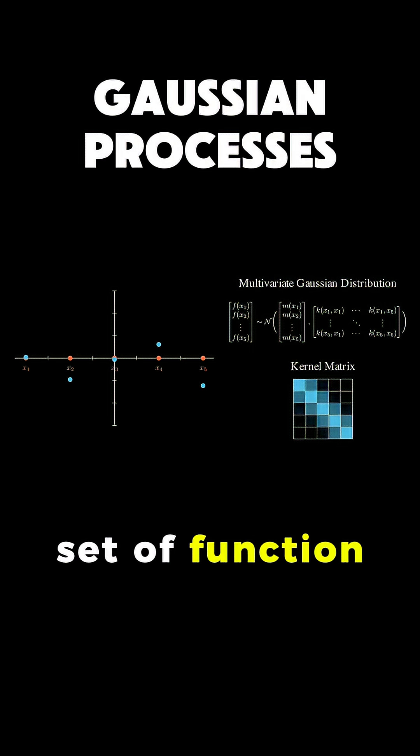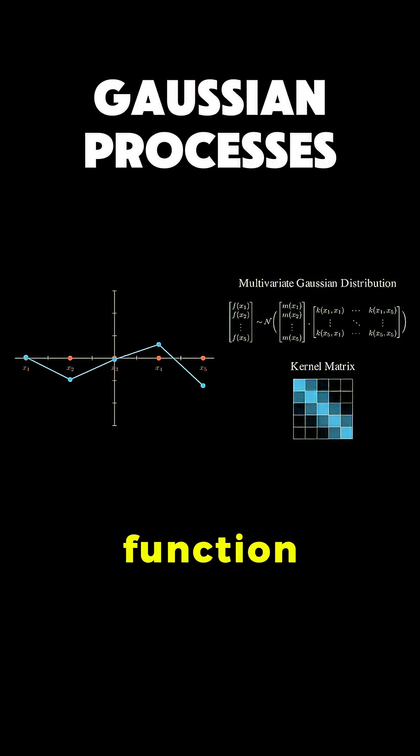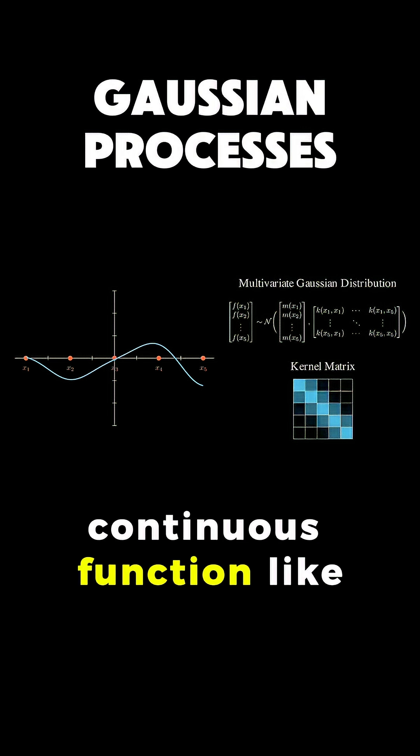we get a set of function values at our chosen points, and we can connect these points to get a function. When we use more points and interpolate smoothly, we get a continuous function like this.